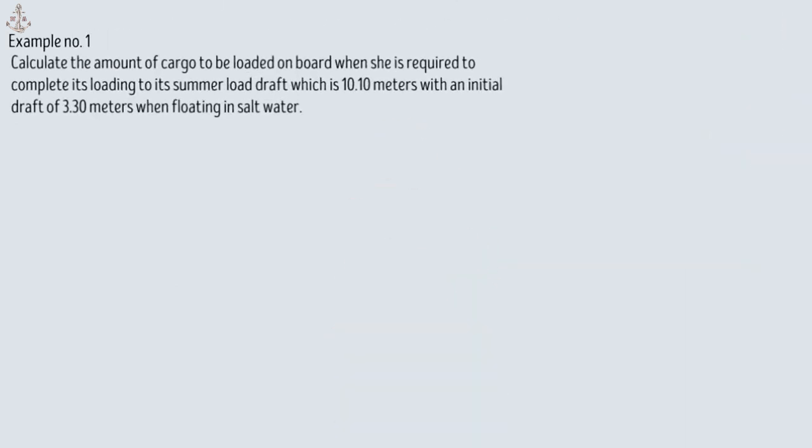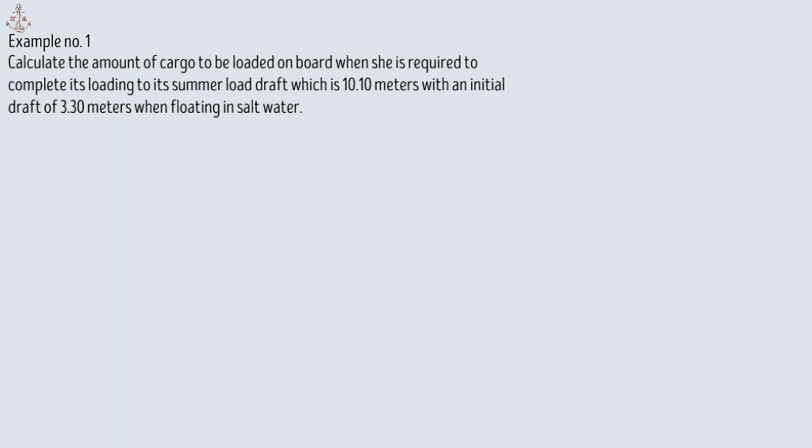This is the first example in this video. Calculate the amount of cargo to be loaded on board when the ship is required to complete its loading to its summer load draft, which is 10.10 meters, with an initial draft of 3.30 meters when floating in salt water.